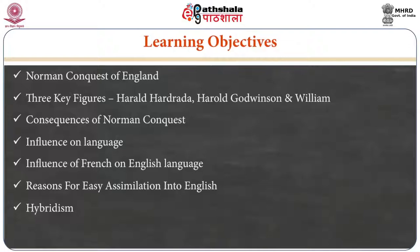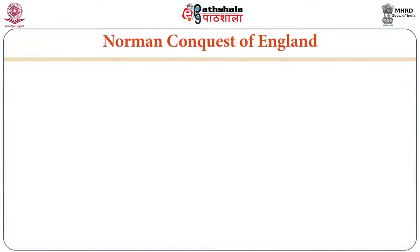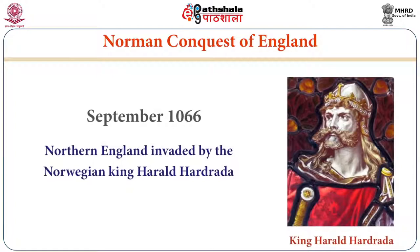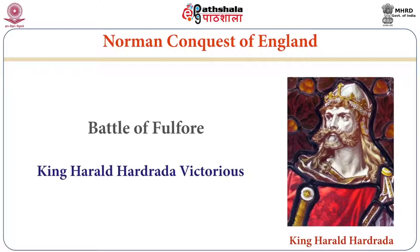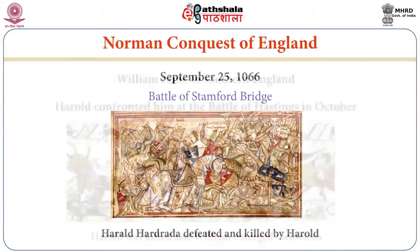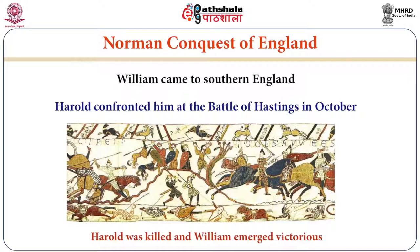Norman Conquest of England means the occupation of England by the Normans — French and Breton soldiers led by Duke William II of Normandy, later William the Conqueror. This battle took place in 1066 AD. Northern England was invaded by the Norwegian King Harold Herodeta. Herodeta emerged victorious at the Battle of Fulford, then defeated and killed Harold at the Battle of Stamford Bridge on September 25, 1066. William came to southern England, and Harold went to confront him at the Battle of Hastings in October 1066. Harold was killed and William emerged victorious.